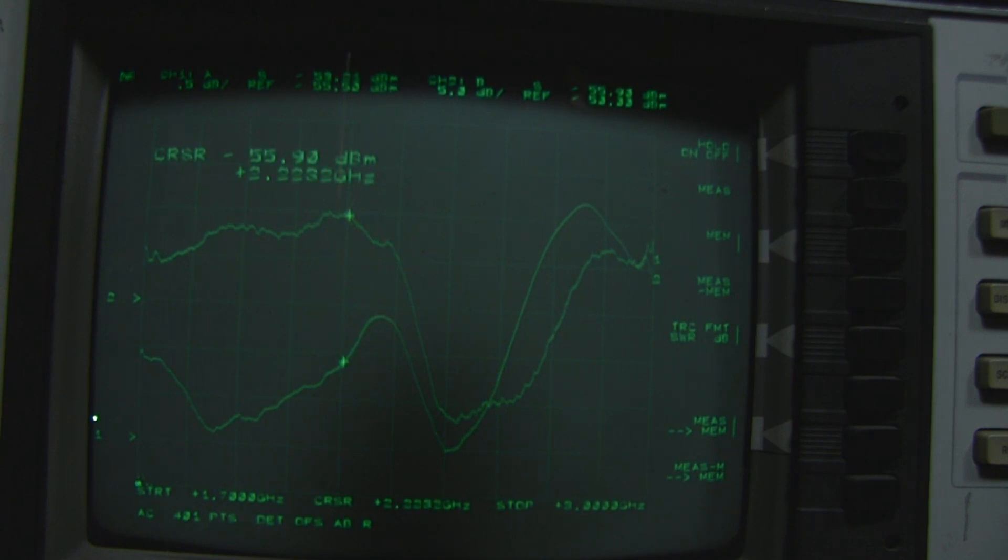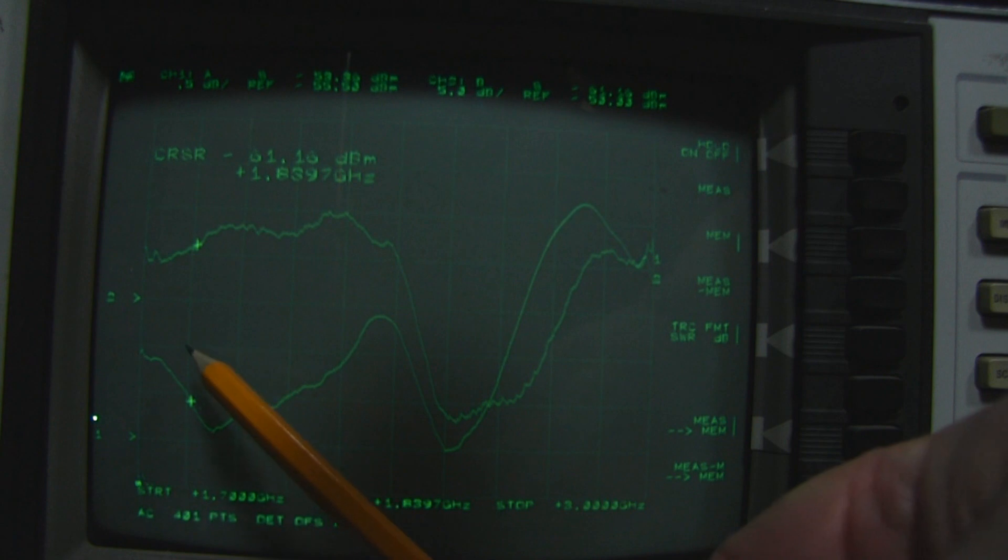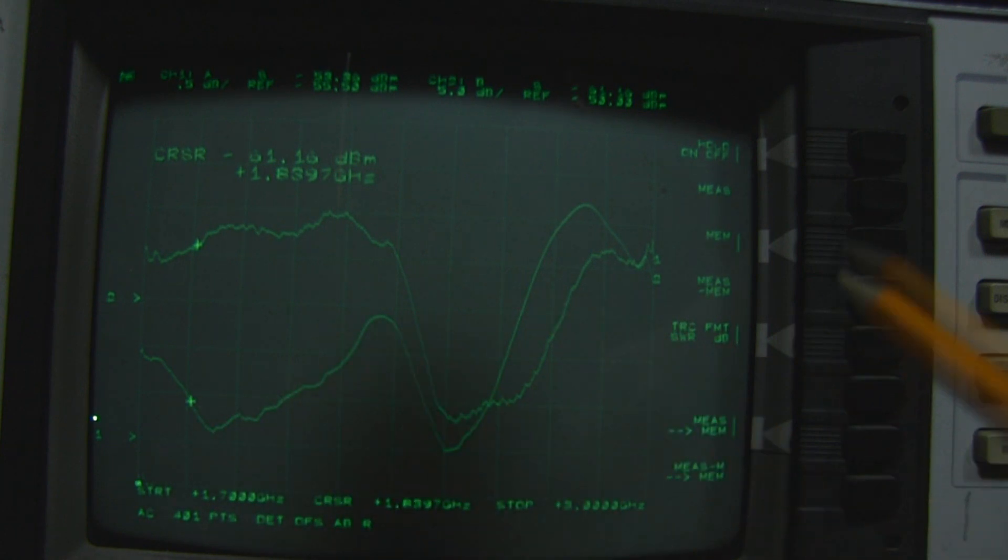But looking at what we can see on the network analyzer, it is only trace number two, which is this trace here, that has a good frequency response for LTE around the 2 gigahertz mark there. Let me move the cursor along and you can see the 2.1 gigahertz there, 2 gigahertz, 1.9 gigahertz, and 1.8 gigahertz. So for LTE, yes this antenna does work for LTE but only on one of the traces.